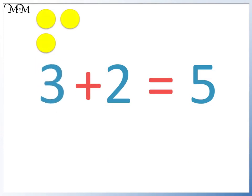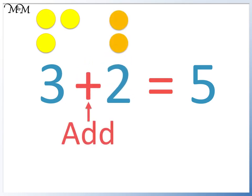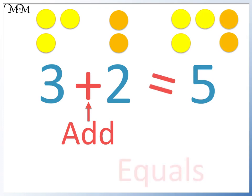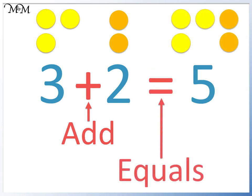Three add two means to combine them into a total. The equal sign tells us that the values on the right and left of the equal sign are worth the same. We read the number sentence as three add two equals five. We can see that the plus sign and the equal sign separate the numbers.